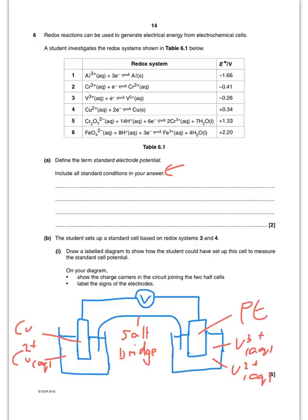They want me to complete a circuit for cells three and four. For cell three I'm using a platinum electrode because there's no solid metal available; both the V³⁺ and V²⁺ would be at 1 mol dm⁻³. For cell four I can use copper as the electrode, with Cu²⁺ also at 1 mol dm⁻³. There's a salt bridge and voltmeter connected.